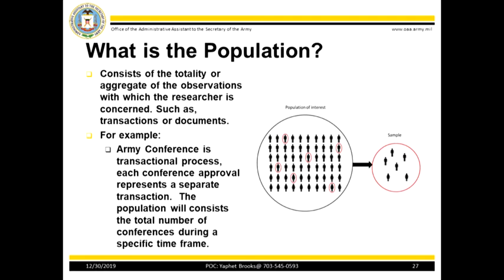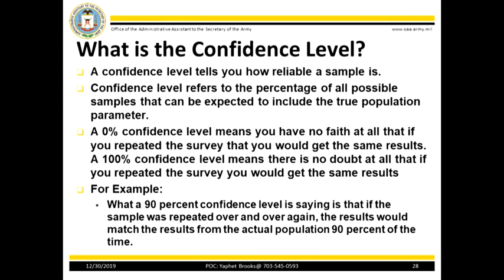The FY20 MICP reporting period is from 1 June 2019 to 15 May 2020. A confidence level tells you how reliable your sample is. Confidence level refers to the percentage of all the possible samples that can be expected to include the true population parameter. A 0% confidence level means you have no faith that if you repeated the survey you will get the same results. A 100% confidence level means there is no doubt that if you repeated the survey, you will get the same results. For example, a 90% confidence level means that if the sample was repeated over and over again, the results would match the results from the actual population 90% of the time.